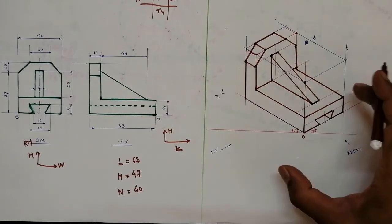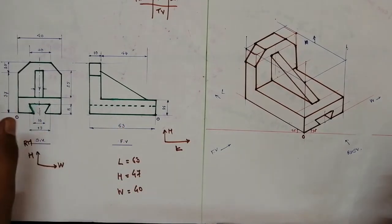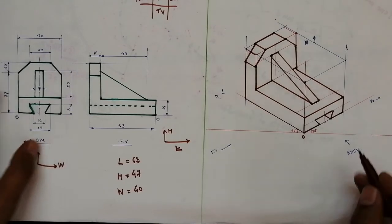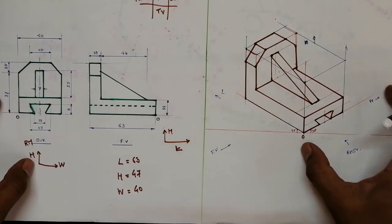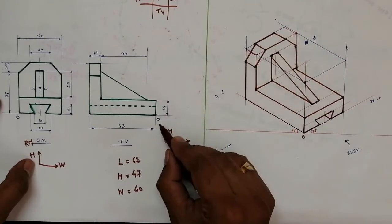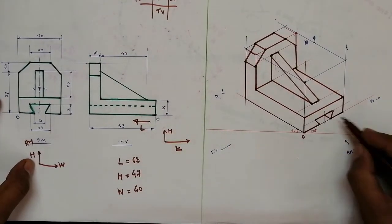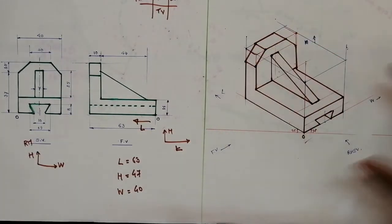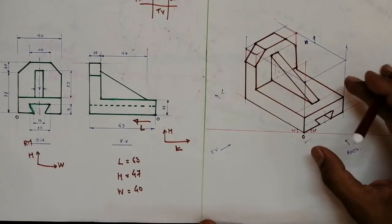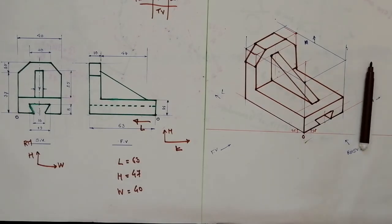This is how we complete the isometric view of orthographic projections when the front view and right hand side view are given. If length is taken in this direction, then this is the front view and this becomes the right hand side view. Origin is mentioned here, so length is in this direction, width is here, and height is vertical. Complete the problem and show the dimensions. We will come up with the next type of problem in the next video. Thank you very much.